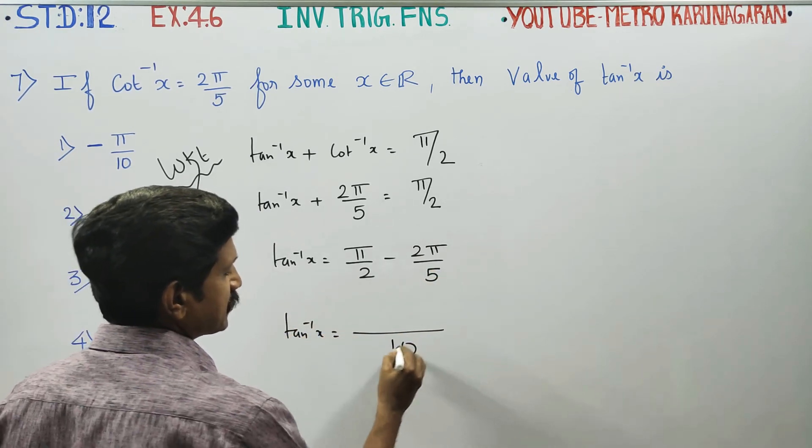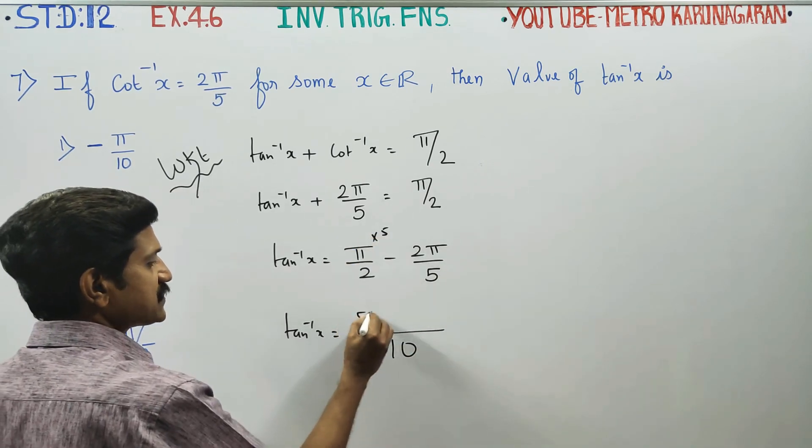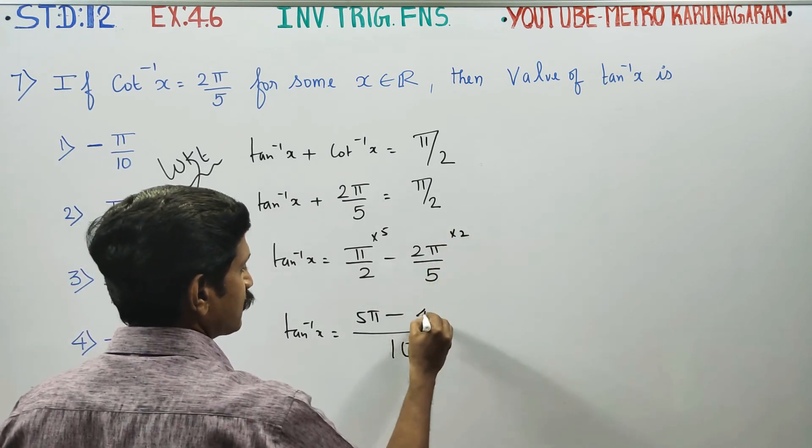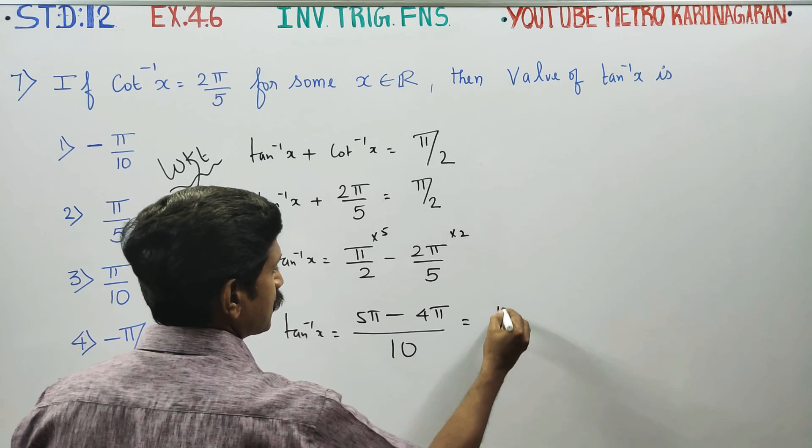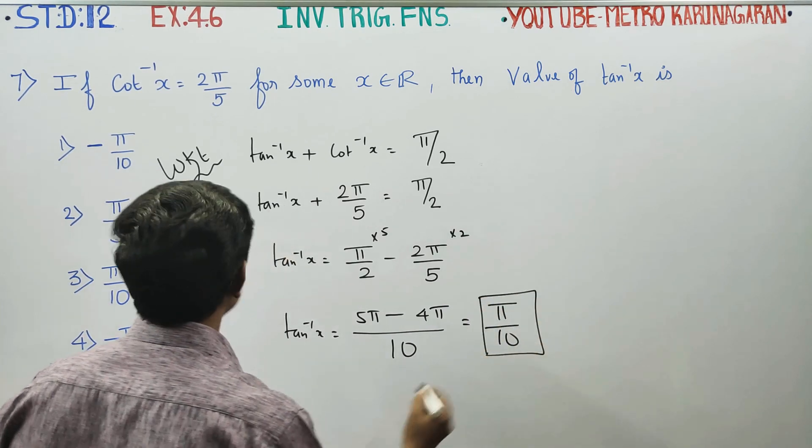LCM of 2 and 5 is 10. 2 times 5 equals 10; π times 5 is 5π. 5 times 2 equals 10; 2π times 2 is 4π. 5π minus 4π gives π over 10. Your answer will be π/10, which is your correct answer.